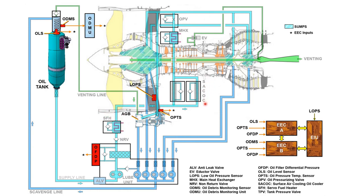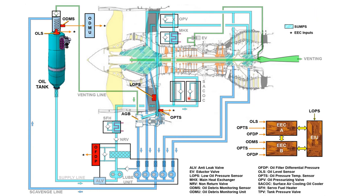After the servo fuel heater, the oil goes to the surface air cooled oil coolers. These are found on the left-hand and right-hand fan case — on the inner part at approximately the four o'clock and eight o'clock areas. When you look from behind, you will see the surface air cooled oil coolers at the eight o'clock and four o'clock positions on the inner fan or bypass path.